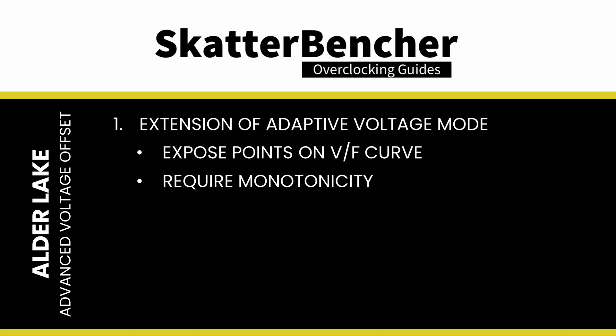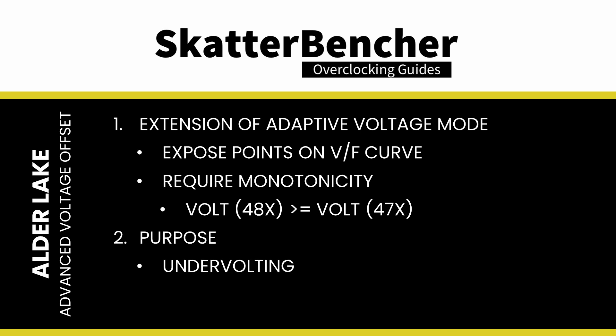The only requirement for the VF curve is monotonicity. Following a monotonic function, the voltage for a given CPU ratio must be equal to or higher than the next lower ratio — so the voltage for 48x must be equal to or higher than 47x. The main purpose of Advanced Voltage Offset is to provide end users with the ability to undervolt their CPUs at specific parts of the VF curve. In addition to undervolting, this feature also allows overvolting, which is particularly useful when manual overclocking and when trying to increase the maximum frequency.